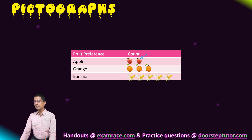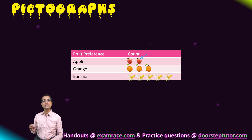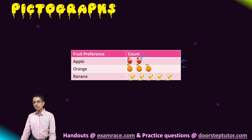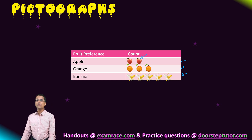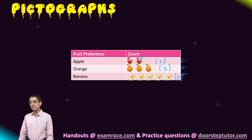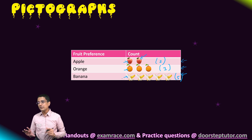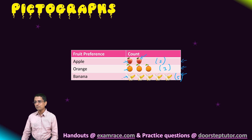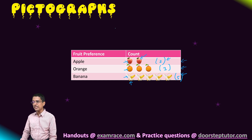Pictographs are a way to represent data in diagrammatic form. This pictograph represents the count of students who like apple, orange, and banana. From this picture I can see that two students like apple, three students like orange, and five students like banana. Instead of writing those numbers numerically, we depict them as pictures — each picture represents one fruit, so each picture represents only one count.